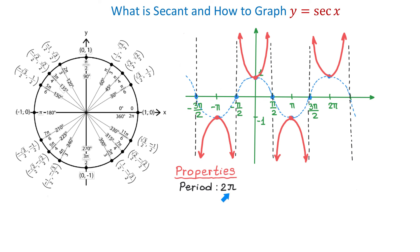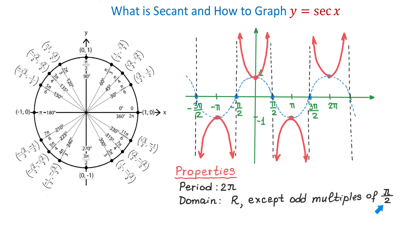Now let's discuss a few properties. The period of this function is 2 pi, just like the cosine function. The domain is all real numbers except at odd multiples of pi over 2 — numbers like pi over 2, 3 pi over 2, 5 pi over 2, 7 pi over 2, and so on — where the function is undefined. The range is all real numbers y such that y is greater than or equal to 1, or y is less than or equal to negative 1. So the cosine function occupies the middle, while the secant function extends from 1 upward or from negative 1 downward.